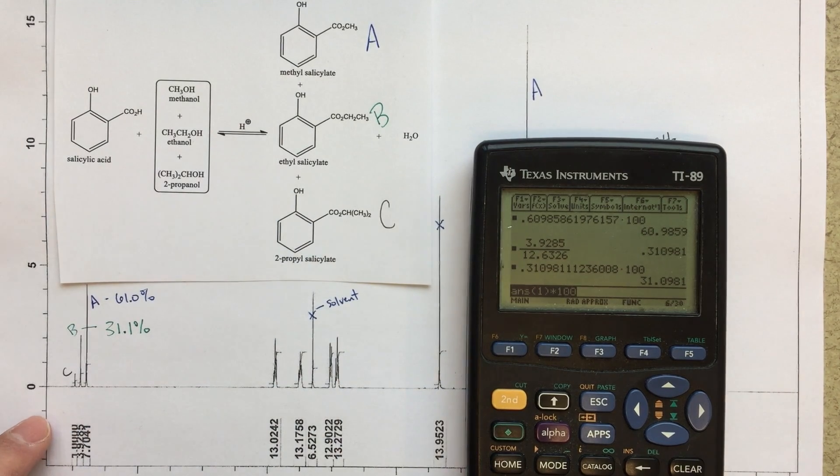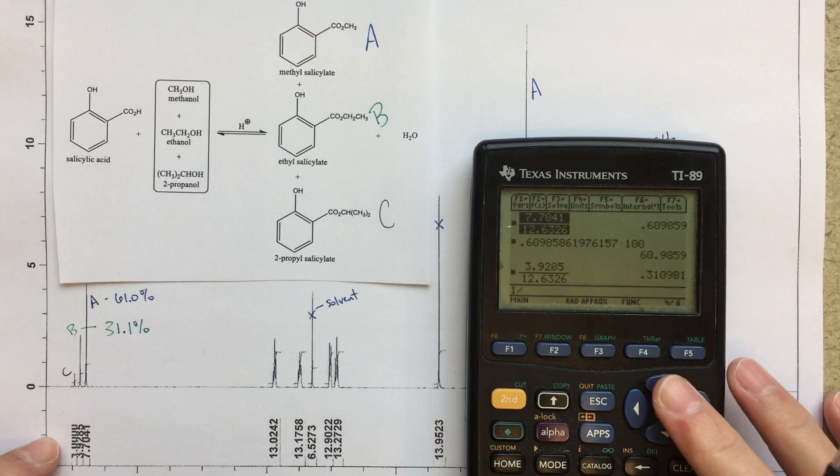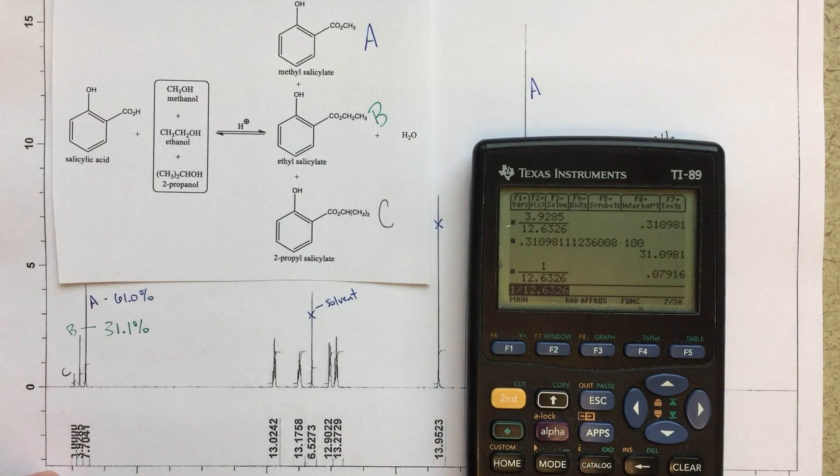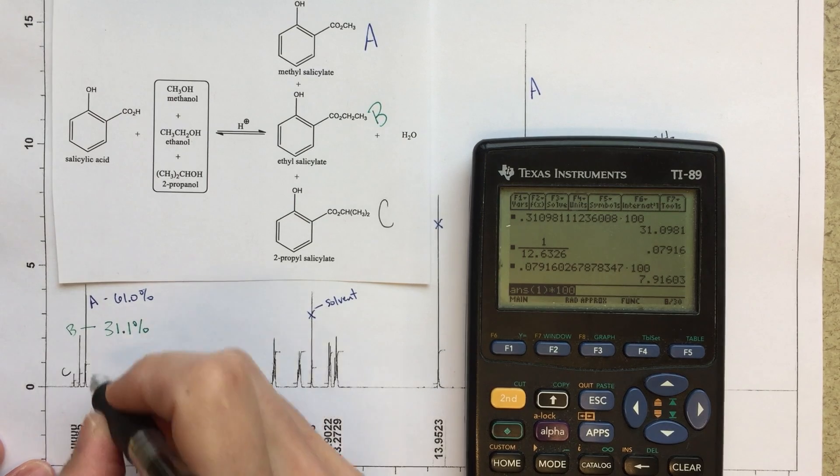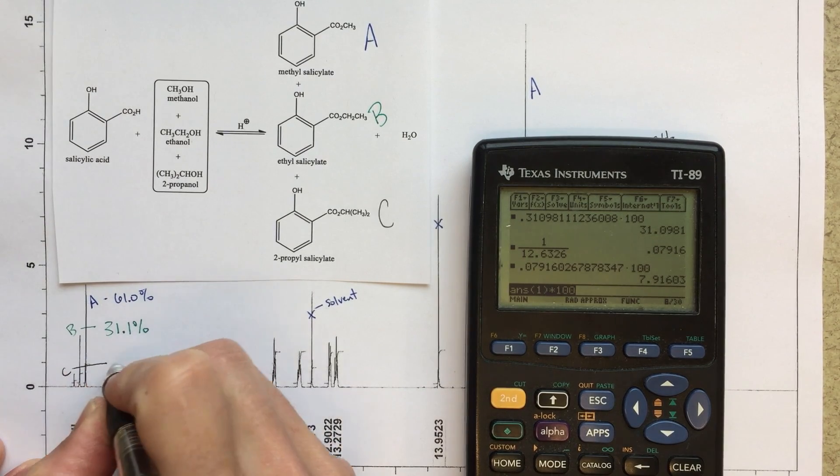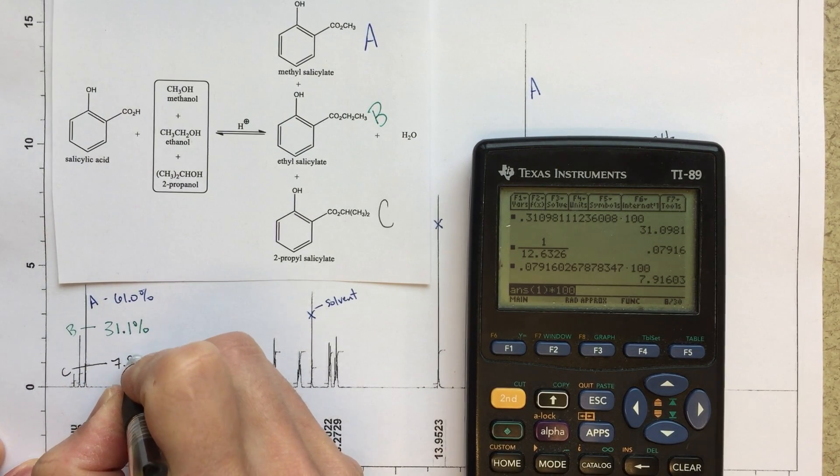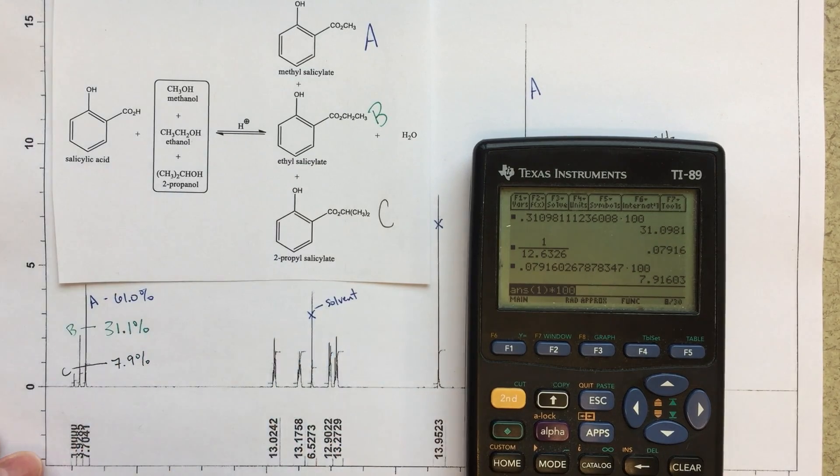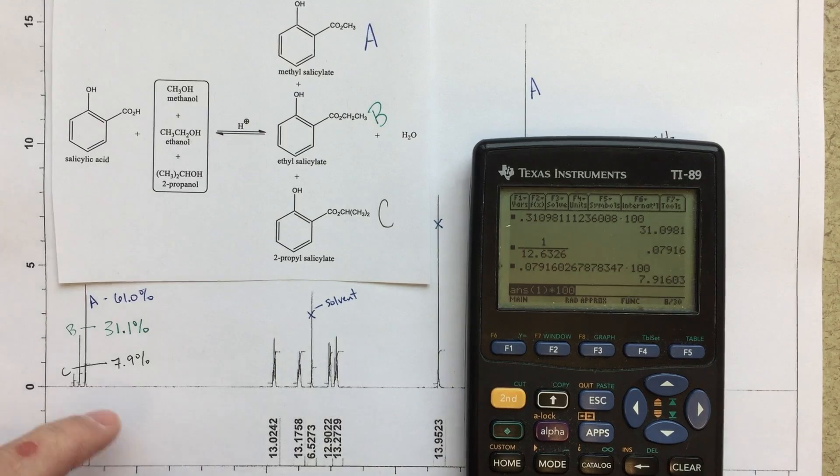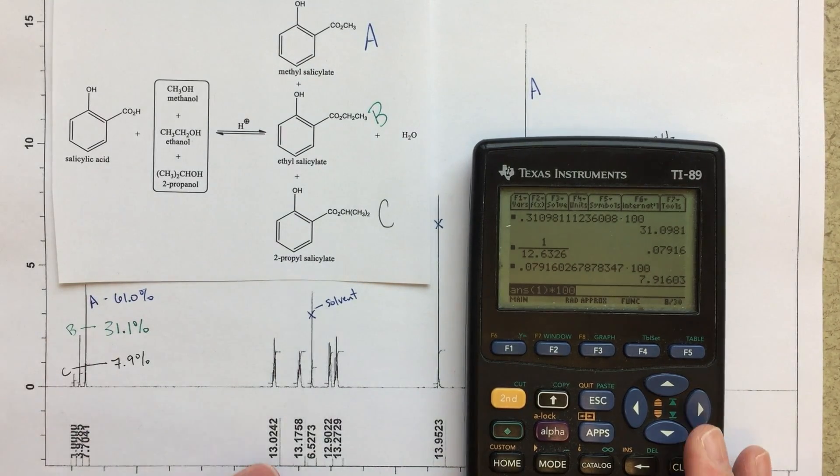And we could do the same thing for C. So for C, it's going to be 1 divided by, go back up and get that percentage, 7.9%. So C, let's draw one over here, 7.9%. And these percentages, they should all add up to 100%, right? So that's going to be the relative ratio for our products.